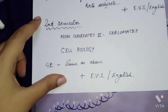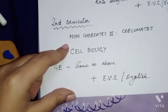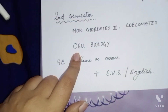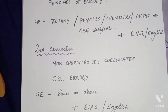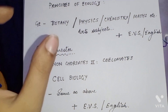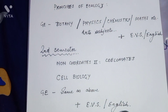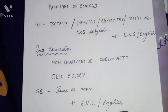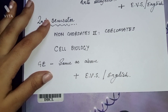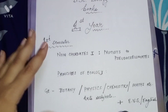GE is the extra subject. In the second semester, the core subjects are Non-chordates (Coelomates) and Cell Biology. GE remains the same. If you want to go to higher education, some universities have criteria that you must have a particular GE subject for one or two years — that is two or four semesters. For example, Botany must be taken for two semesters. In the first and second year we study GE; in third year there is no GE subject. And for EVS and English: if we had EVS first, then next is English, and vice versa.